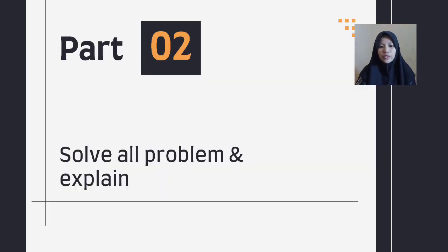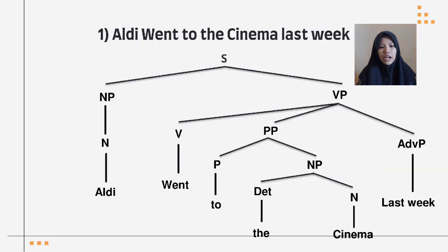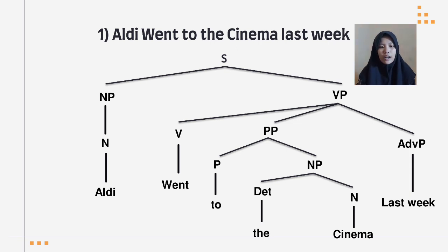Part two: solve all the problems and make three diagrams and explain. First sentence: 'Aldi went to the cinema last week.' The sentence is broken down into a noun phrase and a verb phrase. From the noun phrase, the noun 'Aldi' is derived. The verb phrase contains the verb 'went,' a prepositional phrase, and an adverb phrase. The prepositional phrase is further divided into a preposition 'to' and a noun phrase, which is then divided into a determiner 'the' and a noun 'cinema.' The adverb phrase is 'last week.'